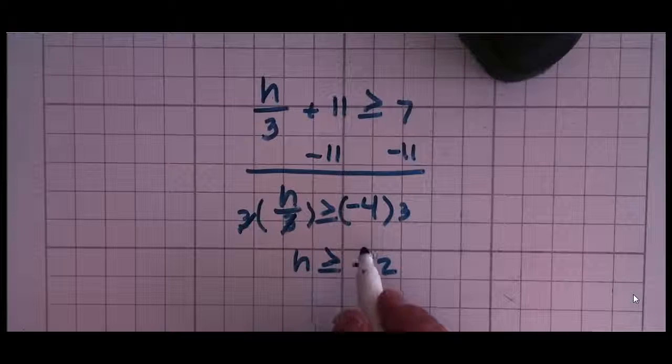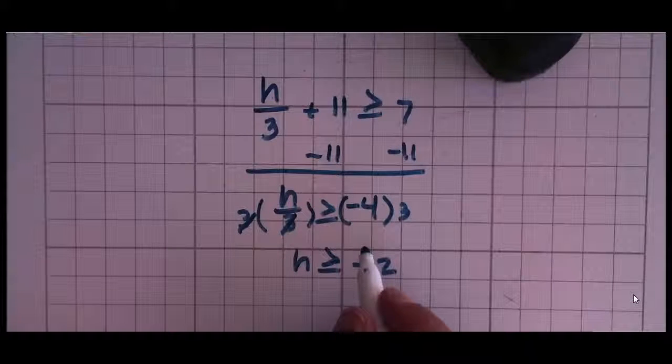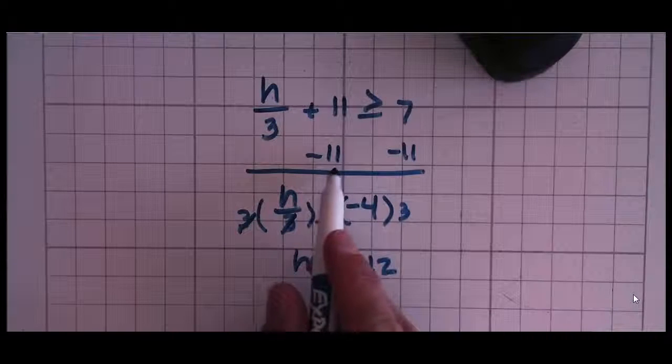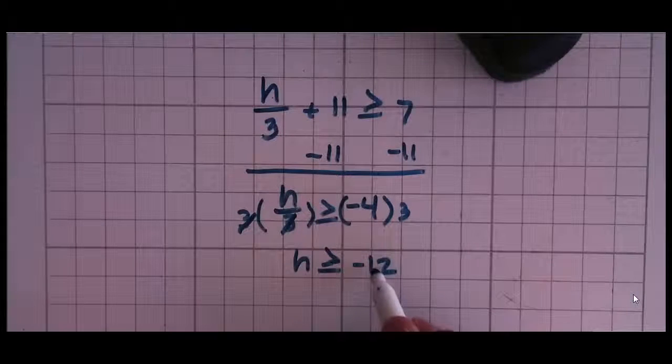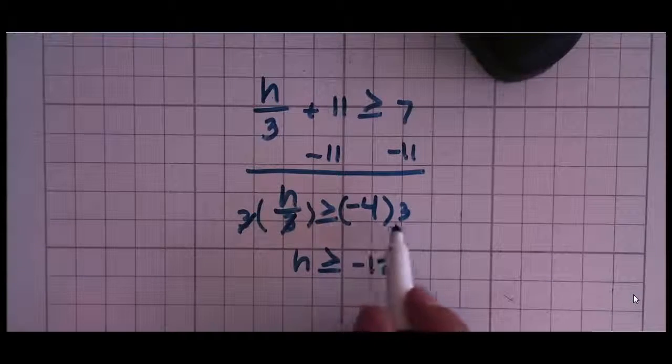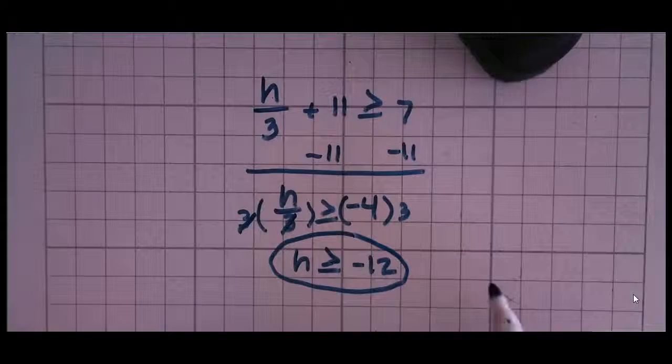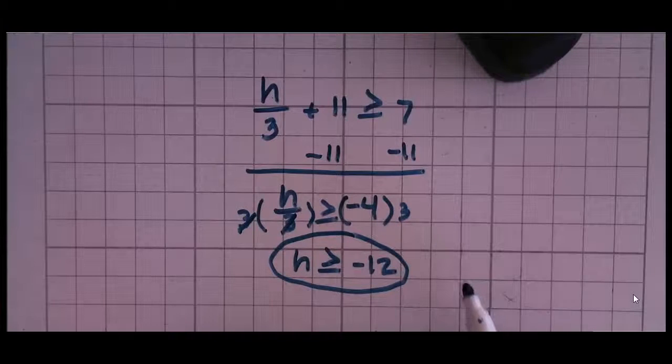h is greater than or equal to negative 12. But I'm not done until I ask myself, have I multiplied or divided by a negative number? I subtracted. My answer is negative. But when I multiplied, I multiplied by a positive number. So my inequality stays the same, and that is my solution.